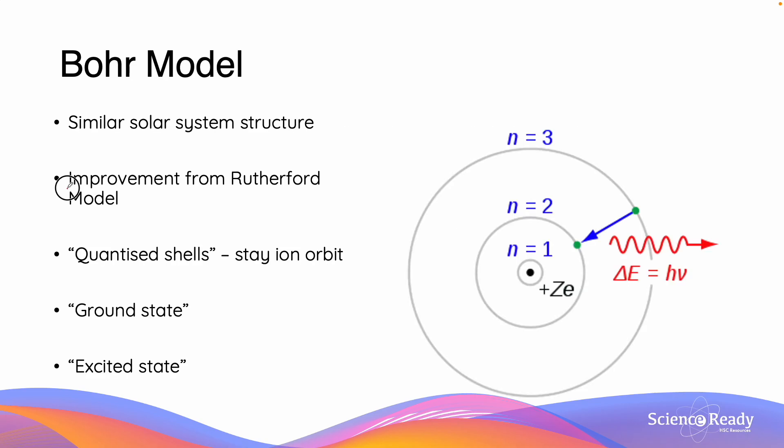The Bohr model is an updated improvement from the Rutherford model. If we remember in the Rutherford model, the electrons are simply orbiting the positive nucleus. But a problem with that model is that according to classical physics, the electrons should lose energy and crash into the nucleus.